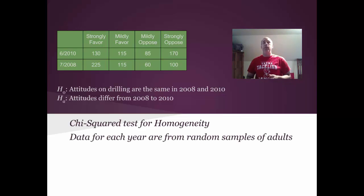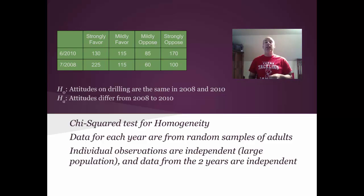The data from each year are random samples of adults. Random sample from 2008. Random sample from 2010. The individual observations for each year are independent, meaning we have large populations. And the data from each of the two years are independent. So we have independent random samples drawn from large populations. And also we verified earlier that the expected counts are all at least five. So those conditions are all met.